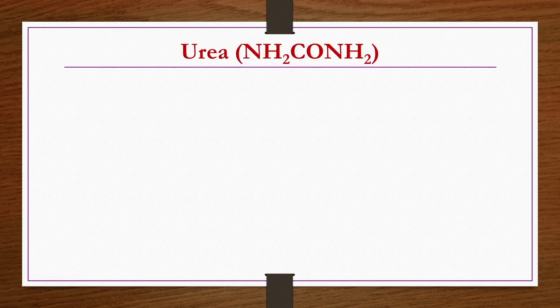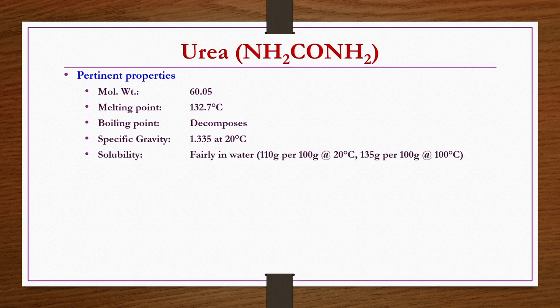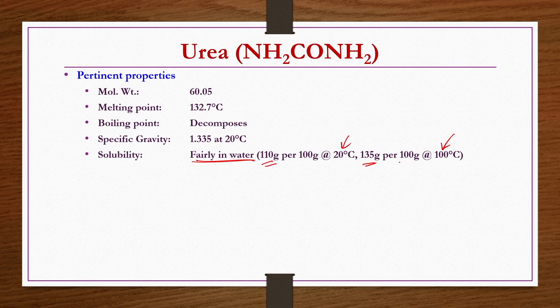Urea is NH₂CONH₂. Its pertinent properties: molecular weight is 60.05, melting point is 132.7°C, and it decomposes — meaning it has no boiling point. Specific gravity is 1.335 at 20°C. Regarding solubility, it is fairly soluble in water and solubility increases with temperature — 110 g of urea dissolves per 100 g of water at 20°C, whereas at 100°C it is 135 g per 100 g of water.